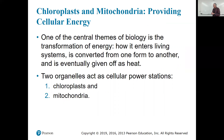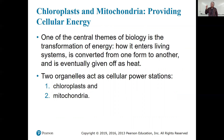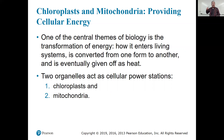One of the central things in biology is the transformation of energy — how it enters living systems, is converted from one form to another, and eventually given off as heat. You cannot make or destroy energy; you just transform it. Two organelles act as cellular power stations: chloroplasts in plants, and mitochondria in animals and plants. In fact, mitochondria are in all eukaryotes, but only autotrophic organisms have chloroplasts.